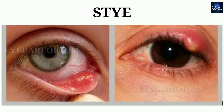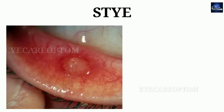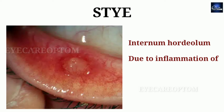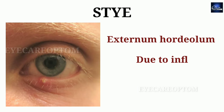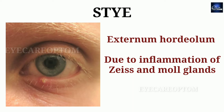This stye or Hordeolum can occur inside the lids or outside the lids. Inside the lids, it is called an Internum Hordeolum, occurring due to inflammation of meibomian glands. Outside the lids, it is called an Externum Hordeolum, which is due to inflammation of Zeis and Moll glands on the eyelids.